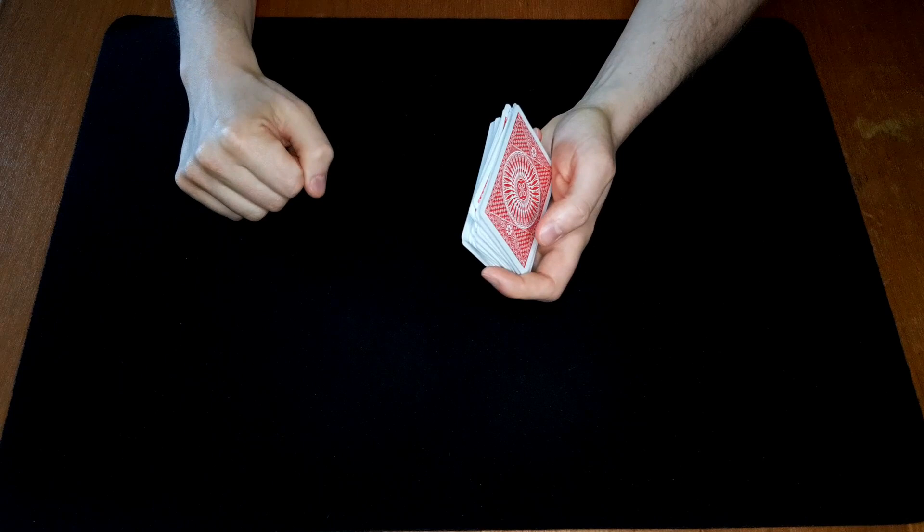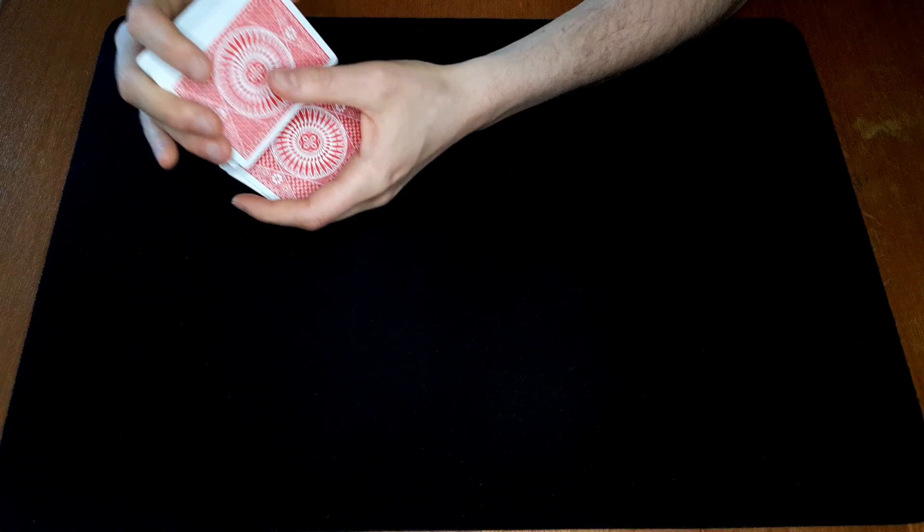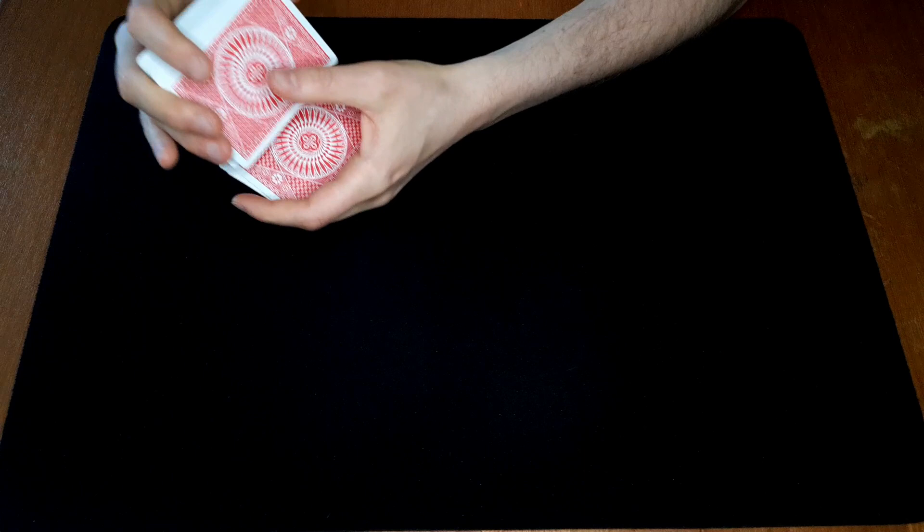So just a false shuffle to start off with. And then we can do the lift shuffle force, which we talked about one or two videos ago. Hopefully it will pop up right now. We shuffle off at least the sevens. We lift it underneath and we shuffle till they say stop and we drop those sevens on top.